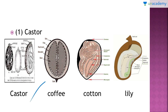Perisperm is a structure which gives nutrition to those parts which are outside the embryo sac. The endosperm gives nutrition to the entire seed. And caruncle, as you know, is an outgrowth of the micropyle. I hope this answers your question.